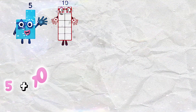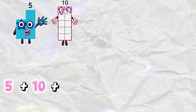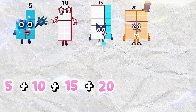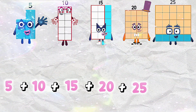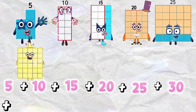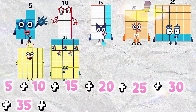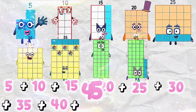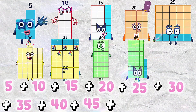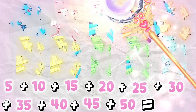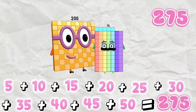5 plus 10 plus 15 plus 20 plus 25 plus 30 plus 35 plus 40 plus 45 plus 50 is equals to 275.